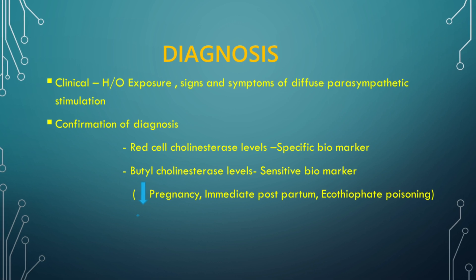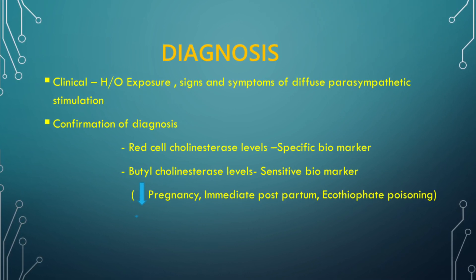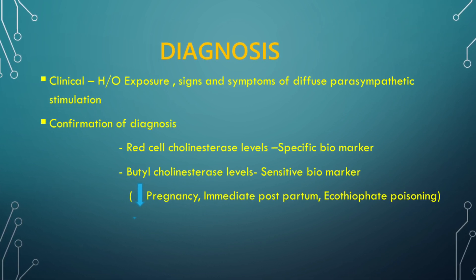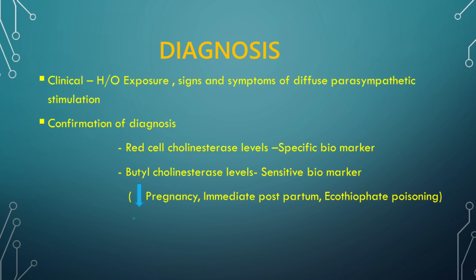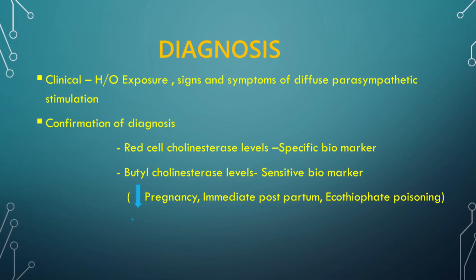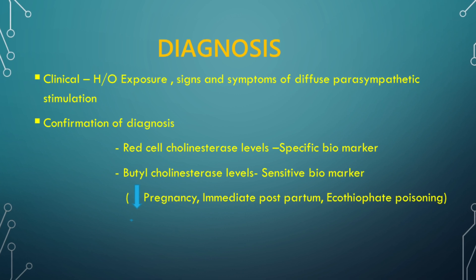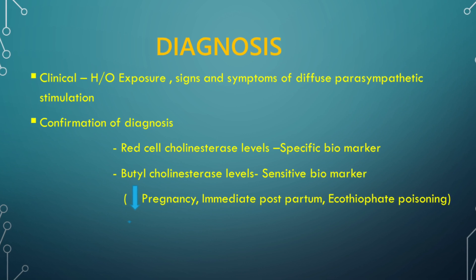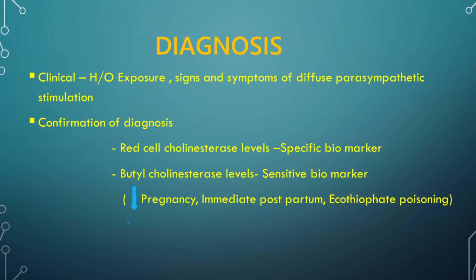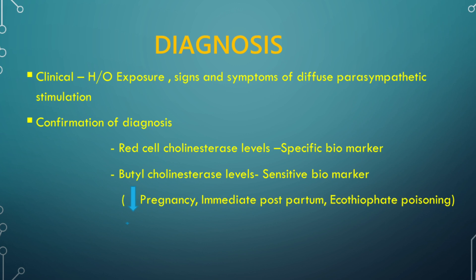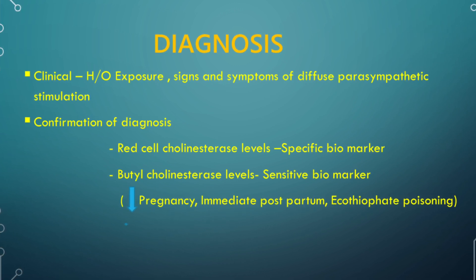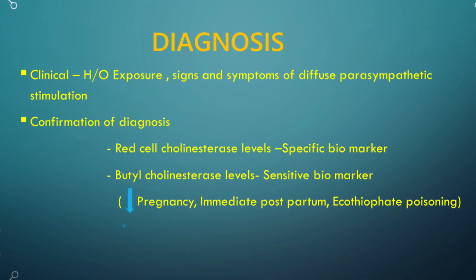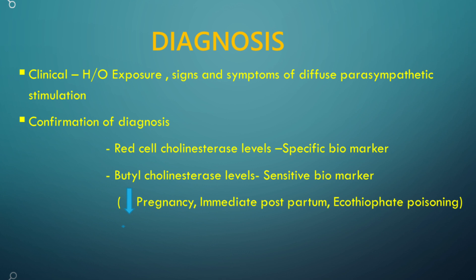Coming to the diagnosis of OP poisoning — it is most often clinical. History of exposure to the compound and signs and symptoms of diffuse parasympathetic stimulation points towards the diagnosis. Confirmation of the diagnosis is by laboratory measurements of levels of both acetylcholinesterase and pseudocholinesterase. Activities of both levels are decreased with organophosphate poisoning, but measurement of red cell cholinesterase levels is more specific than measurement of pseudocholinesterase levels.